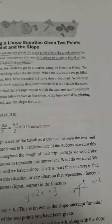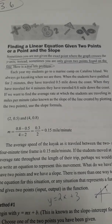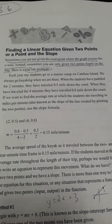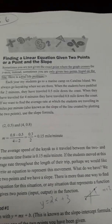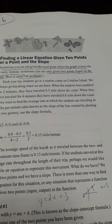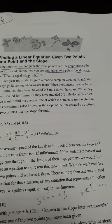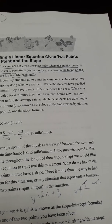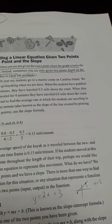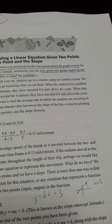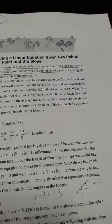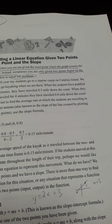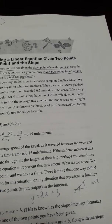Here's the real-life example. Each year my students go to the marine camp on Catalina Island — we always go kayaking. When the students have paddled for two minutes, they have traveled 0.5 miles down the coast. When they have traveled for four minutes, they have traveled 0.8 miles. We want to find the average rate of travel in miles per minute, also known as the slope of the line created by plotting these two points.